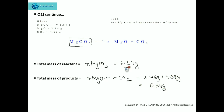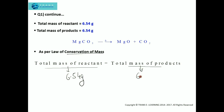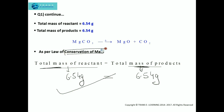This comes out to be 6.54 grams. You can see it is exactly equal. As per the Law of Conservation of Mass, the total mass of the reactants equals the total mass of the products. Here the total mass of the reactant is 6.54 grams, and the total mass of the products has also come out to be 6.54 grams. So this justifies the Law of Conservation of Mass — this equation is in agreement with it.